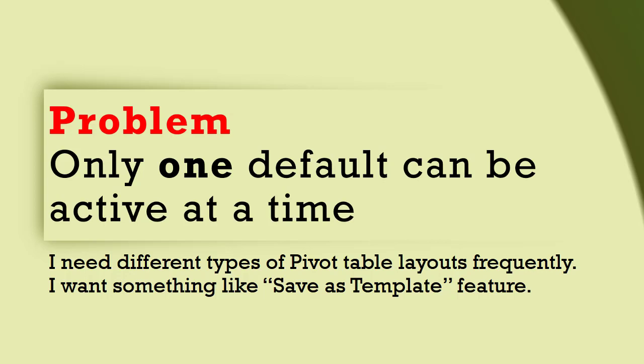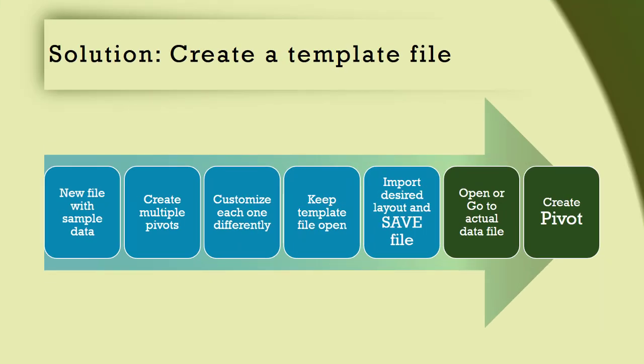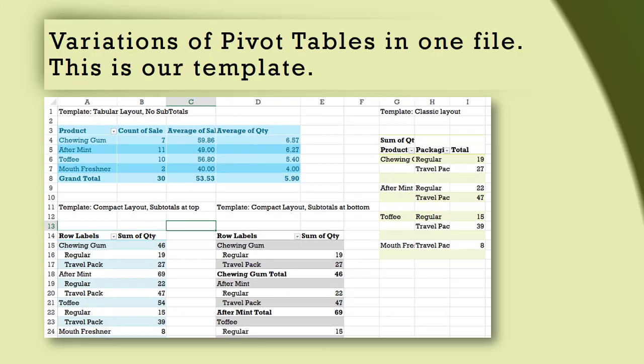So maybe you want something like a Save Pivot Layout As Template feature. That feature is not available out of the box, but we can create one for ourselves with some common sense. The idea is to create a simple template file — not an Excel template, just a pivot table layout template file — containing some sample data and multiple pivot tables, each differently configured as per your requirements. We use one of these as the layout to import and then use that default layout to create pivot tables.